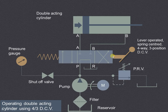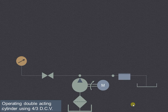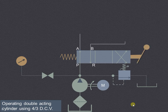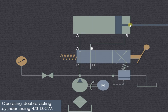This is the symbol for a lever operated, spring centered direction control valve. When we operate the lever to enter left envelope mode, the fluid from the pump enters pressure port P, flows into cylinder port A, and is admitted on that side of the piston. This causes the extension of the piston, and the fluid from the other side exits through port B into the reservoir port R.